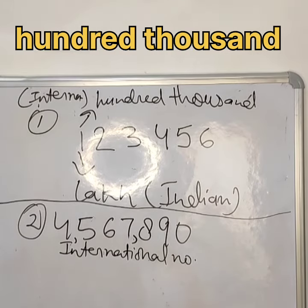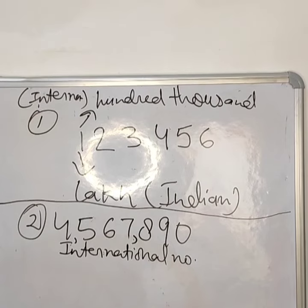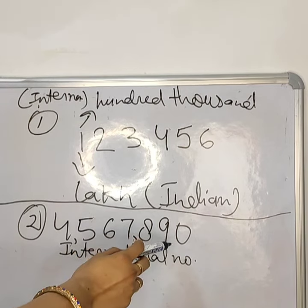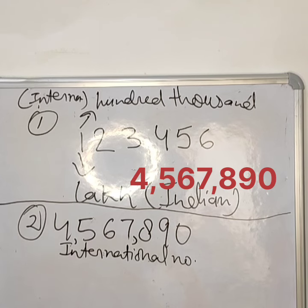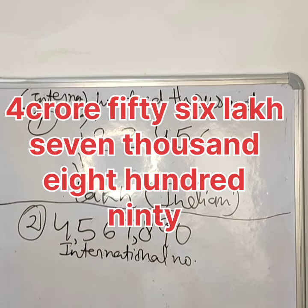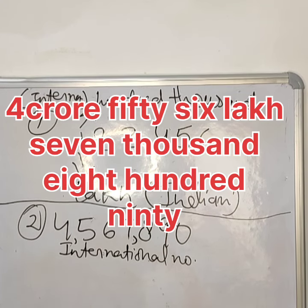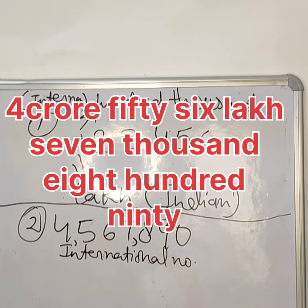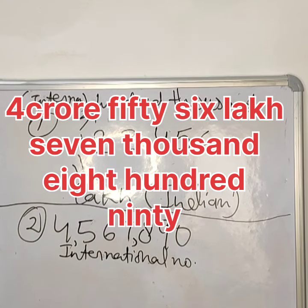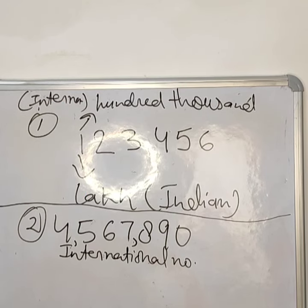Now let's take another example. Example number two is 4,567,890. In the international system, 4 is in the millions place, but in the Indian system, it is in the crore place.